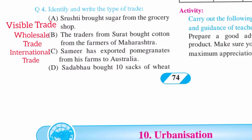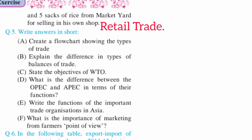Question number four: Identify and write the type of trade. A) Shruti brought sugar from the grocery shop — visible trade. B) Traders from Surat bought cotton from the farmers of Maharashtra — wholesale trade. C) Samir has exported pomegranates from his farm to Australia — international trade. D) Sadabhao bought 10 sacks of wheat and 5 sacks of rice from the market yard for selling in his own shop — retail trade.